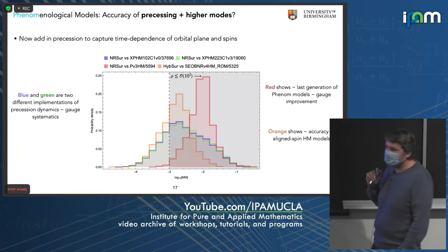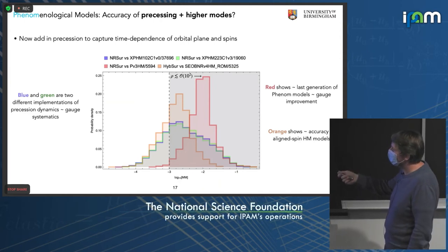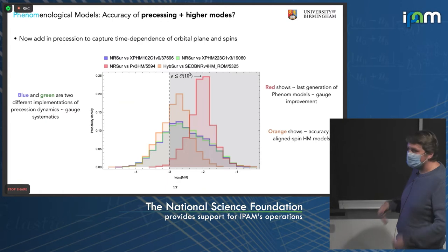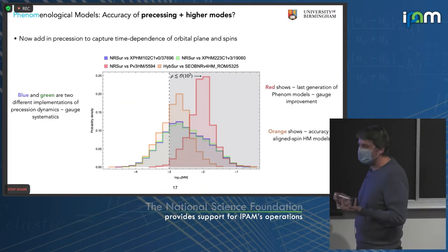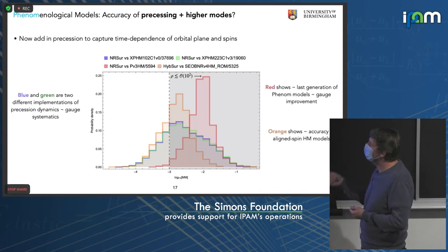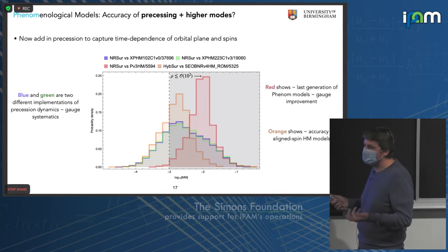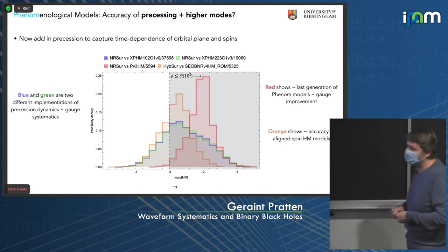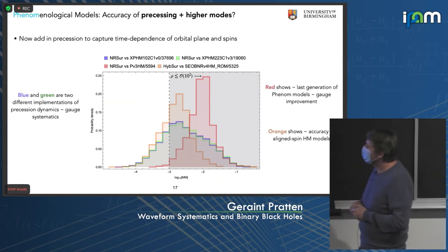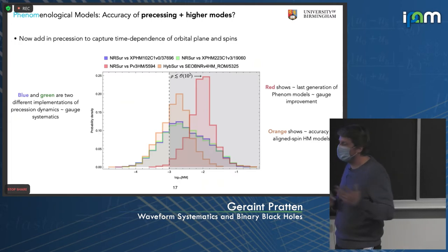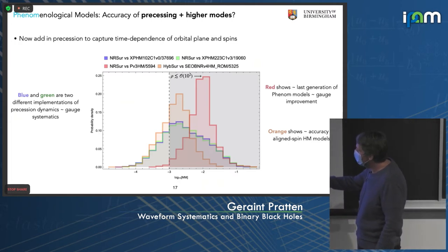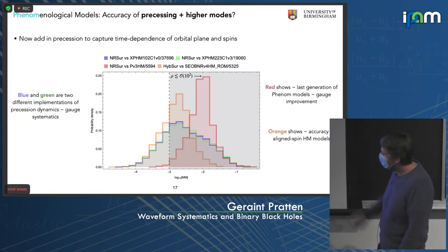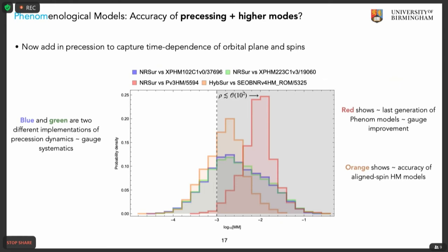Looking at an earlier generation PhenomPv3HM model against the NR surrogate, mismatches are around 10^-2 and further. This shows how much we've gained by improving the PhenomX calibration. The precession prescription hasn't changed between PhenomPv3HM and PhenomXPHM, but the underlying calibration has — so just by improving the baseline model you can improve mismatches by an order of magnitude or more. There is about an order of magnitude discrepancy between our aligned-spin understanding and the precessing + higher multipole waveform models.